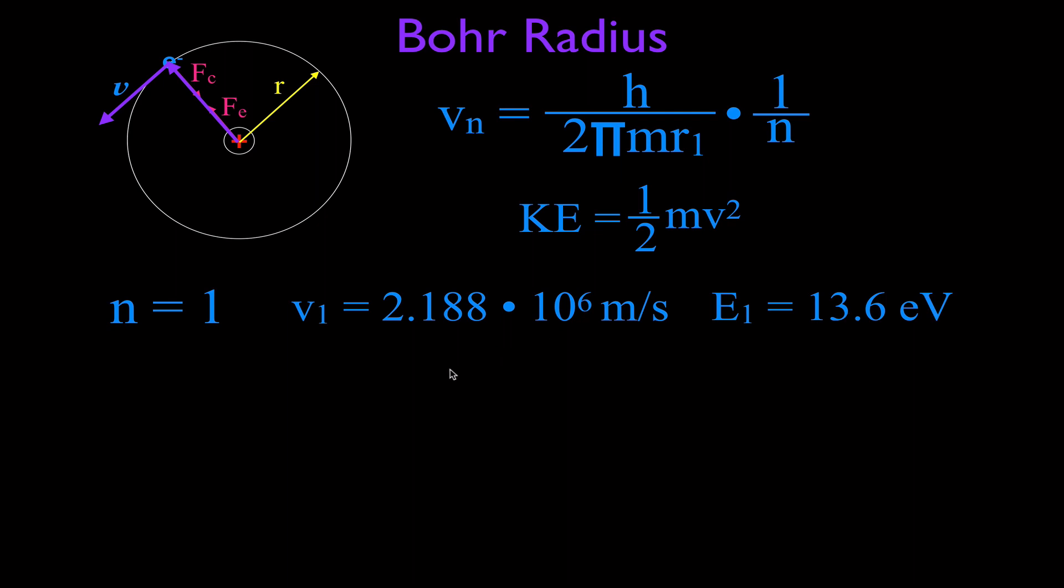Now for the next one, all we got to do is take this value, and it's going to be n equals 2. And if we use this equation, n equals 2, then we get the value here, 2.188 times 10 to the 6, and we're just going to divide that in half. So we get 1.094 times 10 to the 6 meters per second. Now we're going to put that velocity into this equation to get the kinetic energy and then get the electron volts. But we're going to square that. So then you'll notice that the energy ends up being 1/4. 3.4, which is the energy level for the first excited state in hydrogen, is 1/4 of 13.6.